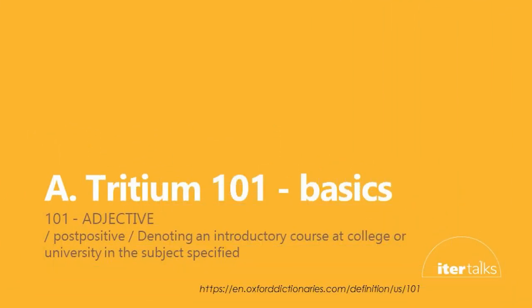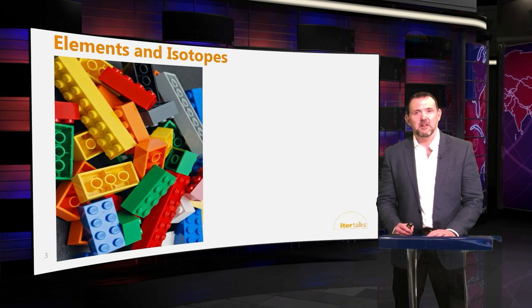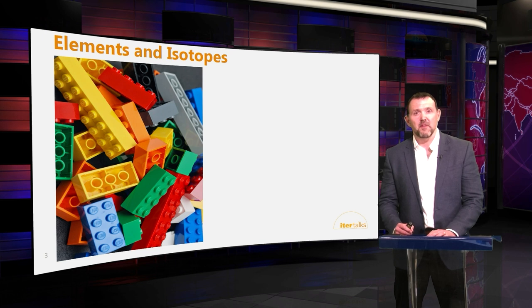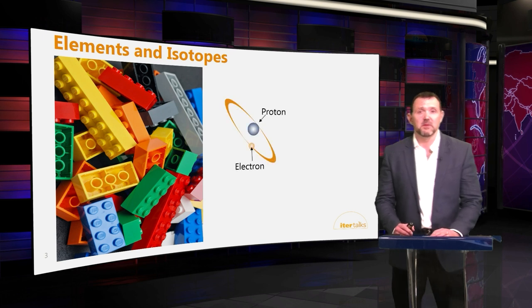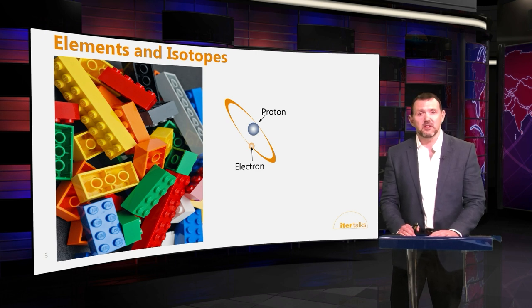Let's get going with the basics and where better to start than the building blocks of the universe — elements. These are the constituent parts of matter and we distinguish them by the makeup of their atoms, namely by the number of protons in their nucleus. If we look at an atom — here's hydrogen, number one — we can see that there's a proton in the nucleus and it's orbited by an electron, a negative particle.